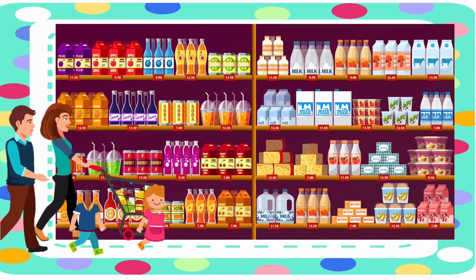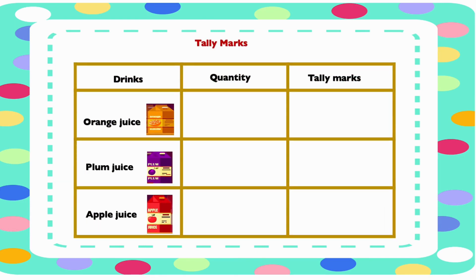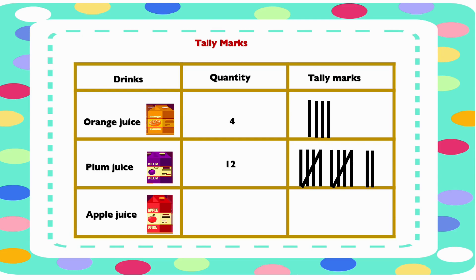Mr. Jones and family also went to another shop and bought some drinks. Now let's count them using tally marks. At the shop they bought some orange juice, some plum juice, and some apple juice. They bought 4 orange juice, represented by 4 straight lines. They bought 12 plum juice, represented by 2 groups of 5 and 2 straight lines. They bought 8 apple juice, represented by 1 group of 5 and 3 straight lines.